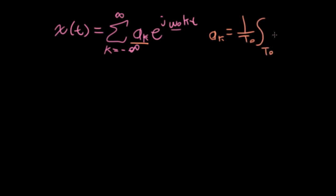In which we could evaluate over any period the function we wanted to analyze, times e to the minus j omega-naught kt dt. So this is all well and good, but the trouble with Fourier series is that it only applies to periodic functions. Today we're going to look at the Fourier transform.